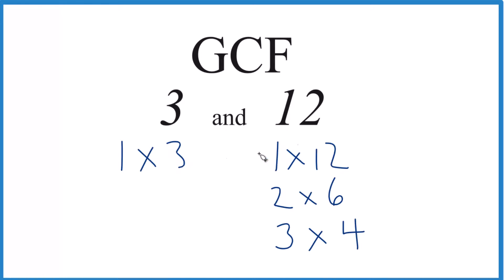So the common factors, the only factors that are the same for both: 1, that's the same for both 3 and 12, and then 3. And 3 is the greatest one. That makes 3 the greatest common factor for 3 and 12.